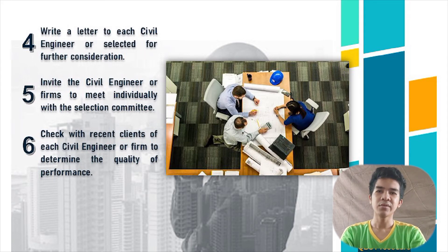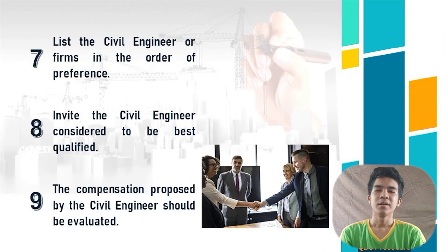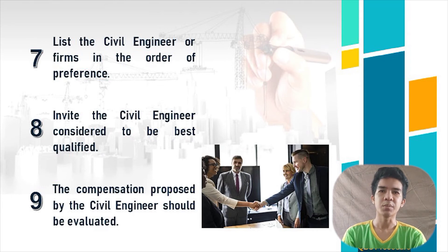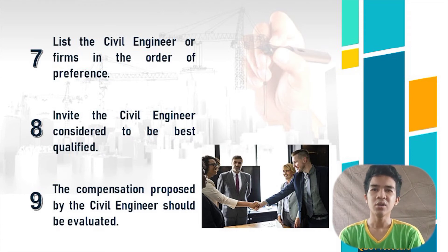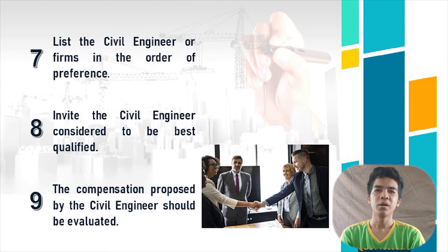Sixth, check the recent clients of each civil engineer or firm to determine the quality of performance. Seventh, list the civil engineers or firms in order of preference, taking into account their approach and understanding of the project, reputation, experience, financial standing, size, personnel available, quality of performance, workload, location, and other factors pertinent to the project being considered.